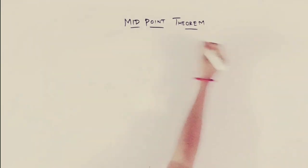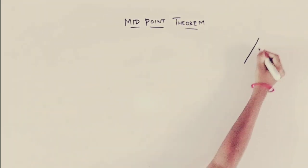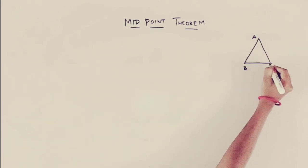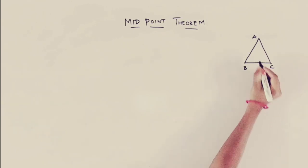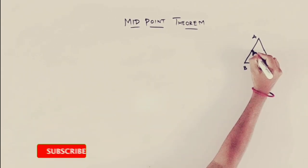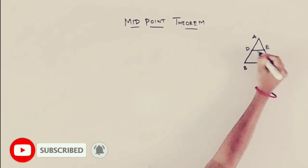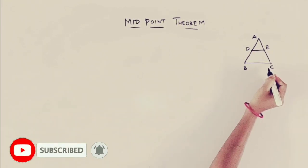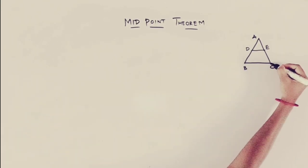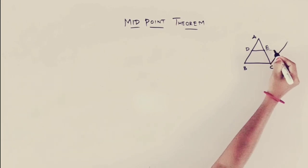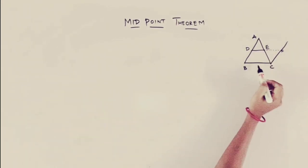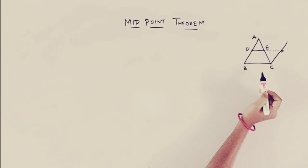So, first, the diagram. A, B, C is a triangle. We divide side AB at point D and side AC at point E. DE is parallel to BC. So, this is the midpoint theorem diagram.